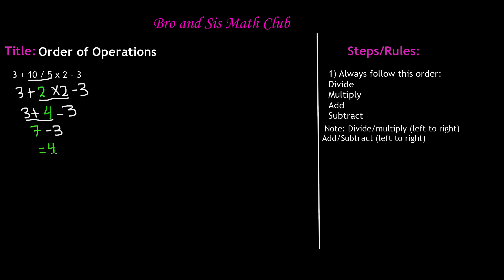So the answer to this problem, 3 + 10 ÷ 5 × 2 - 3, is equal to 4. So this may have been a little confusing if it was the first time that you've done this, but if you practice this using the order of operations, it gets really simple, okay?